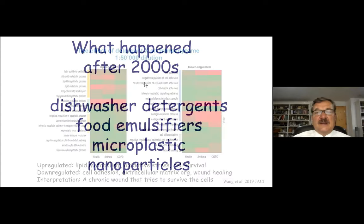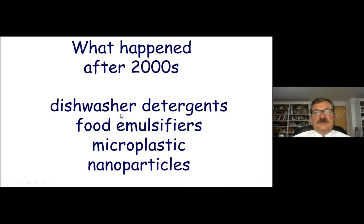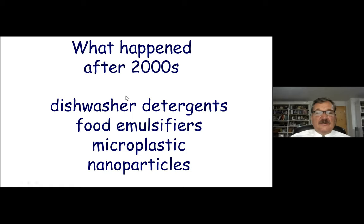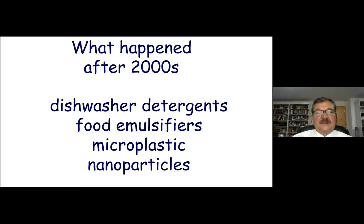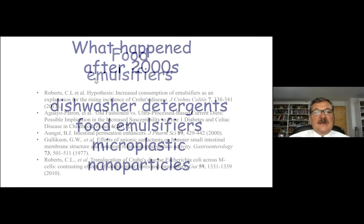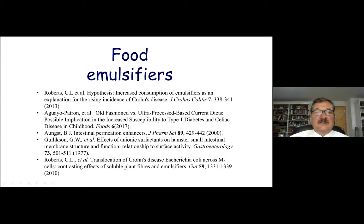After 2000, we also had exposure to dishwasher detergents. Dishwasher devices were introduced to homes after the 1980s but became very commonly used after 2000, including professional dishwashers in universities and restaurants. We also have food emulsifiers that have been used since the 1960s but are increasingly used. Microplastic is said to be a problem of the ocean for whales, but we can easily say it's a problem for all humanity because we have huge microplastic exposure in inner cities. Food emulsifiers are a huge problem for food allergy, eosinophilic esophagitis, and colitis, as we can see from many publications.